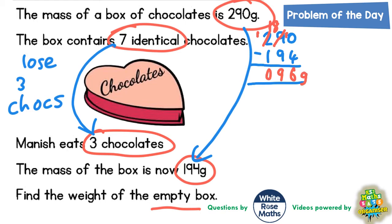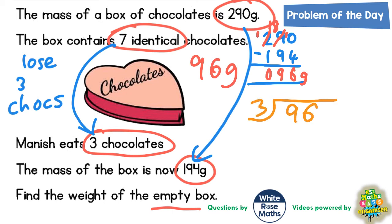So if we've just lost three chocolates and the weight of the box has dropped by 96 grams, then those three chocolates must have been worth 96 grams. Now what we're going to do next is divide the 96 grams by 3, and that will tell us what one of those chocolates is worth — in other words, what each chocolate is worth. Threes into 9 goes three times, and threes into 6 goes twice. So each chocolate in the box must be worth 32 grams.